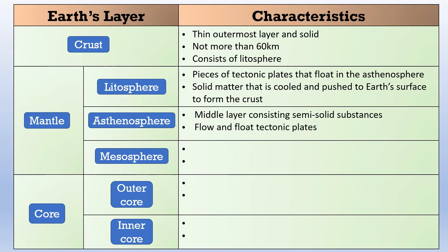The asthenosphere is the middle layer of our mantle. It consists of semi-solid substances due to the half molten state and it flows and floats the tectonic plates. Lastly in the mantle, it is the mesosphere. It is the innermost layer of mantle and it is mostly solid.